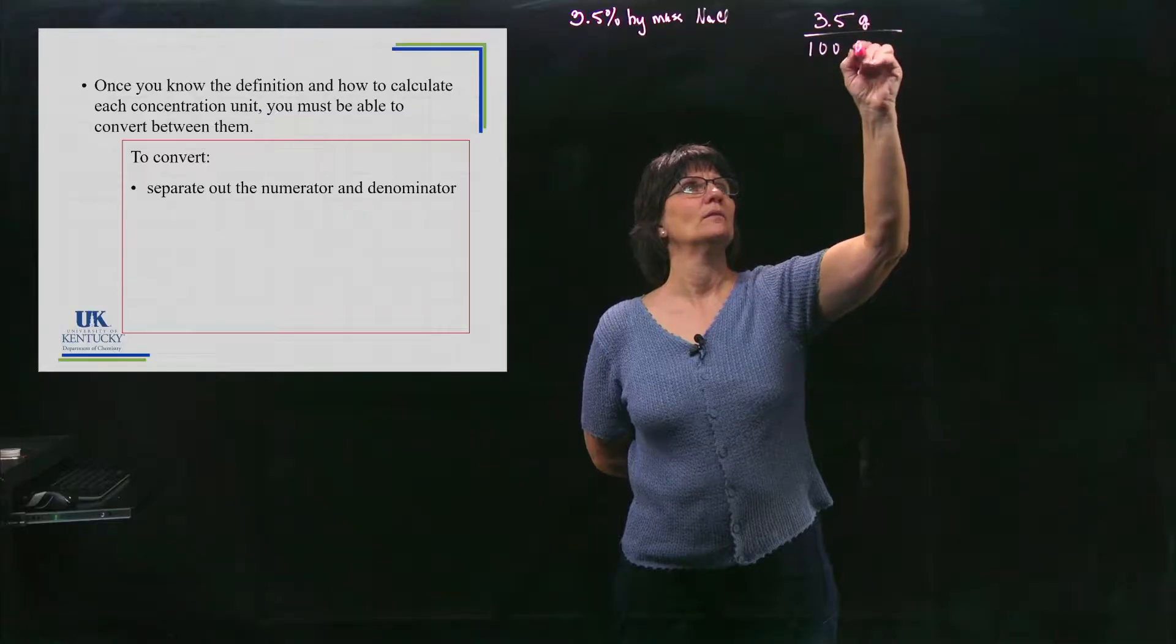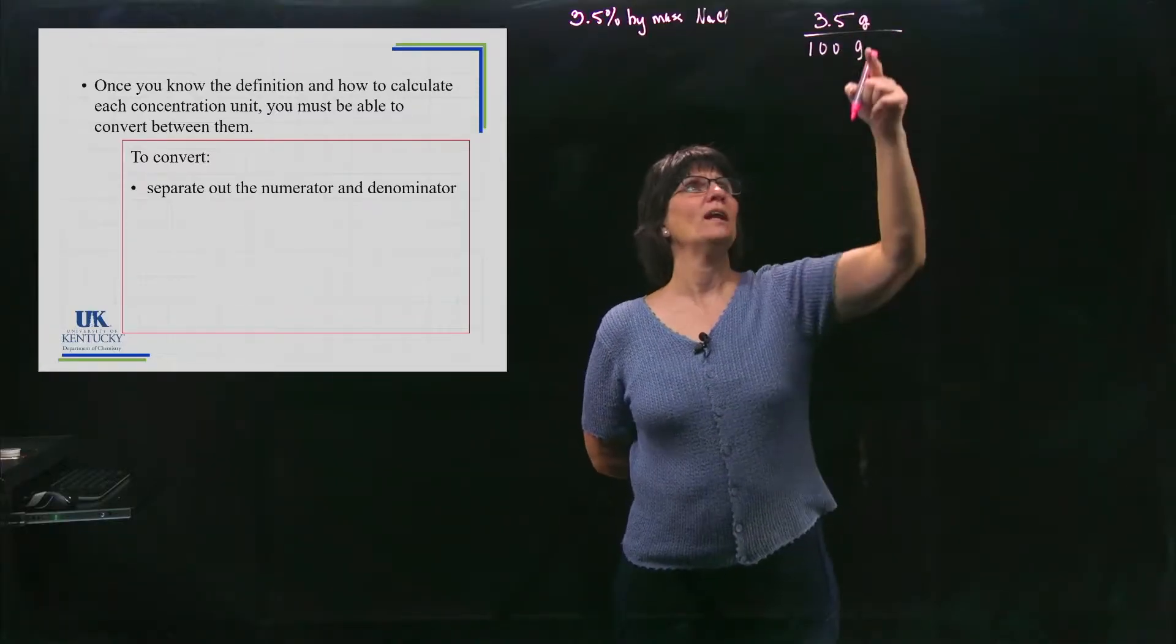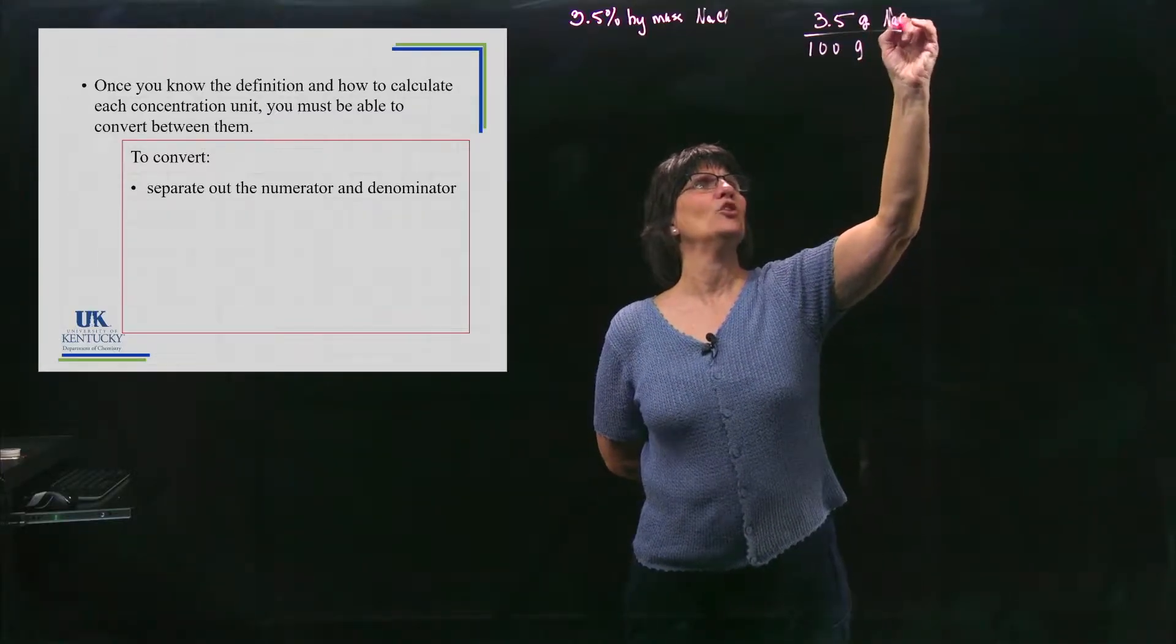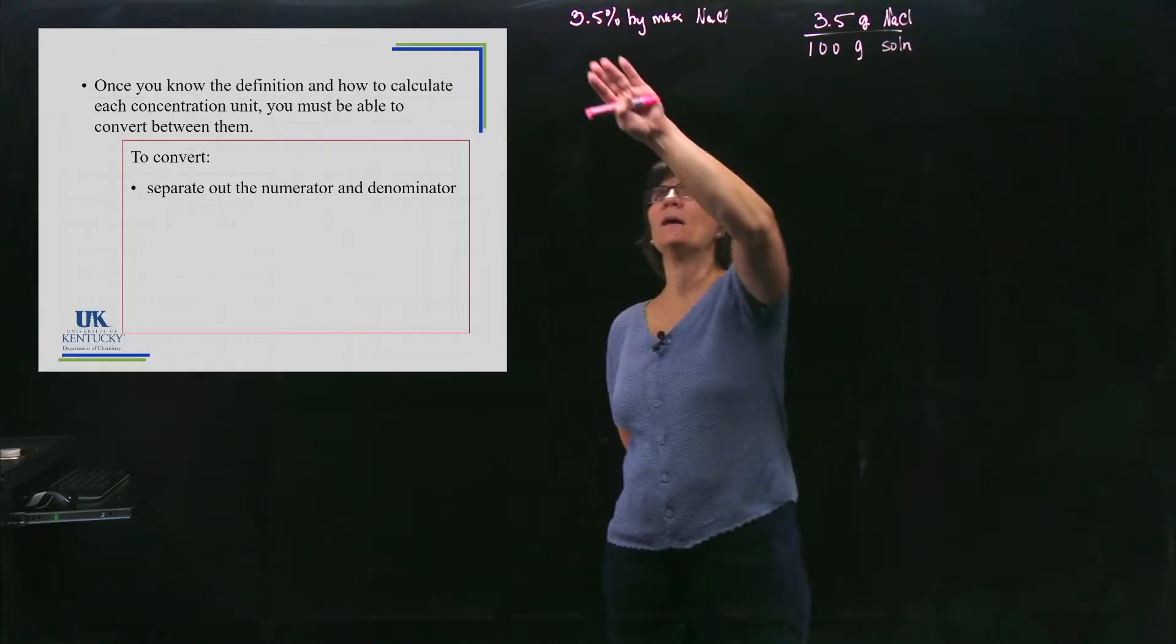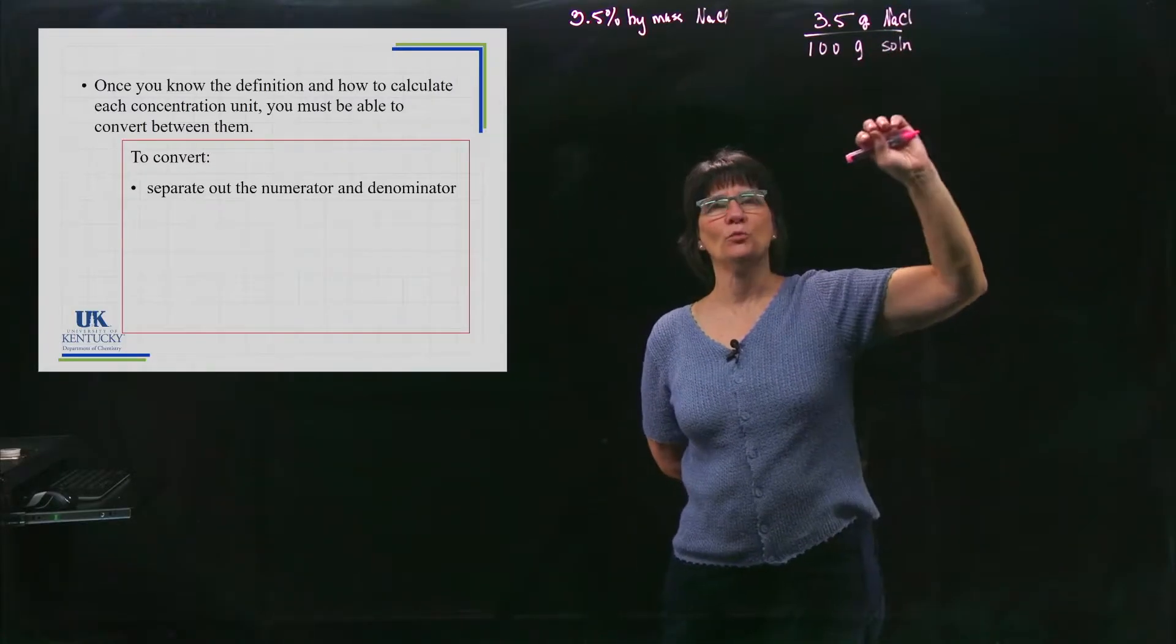Put units with it. It's percent by mass. Put what it is: sodium chloride in the numerator and solution in the denominator. So you take that and you divide it into a numerator and a denominator.